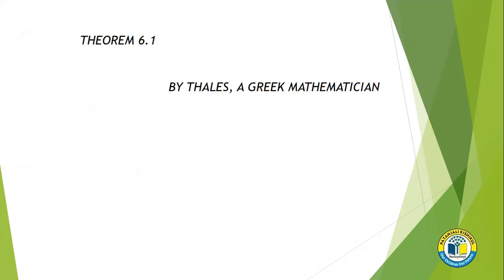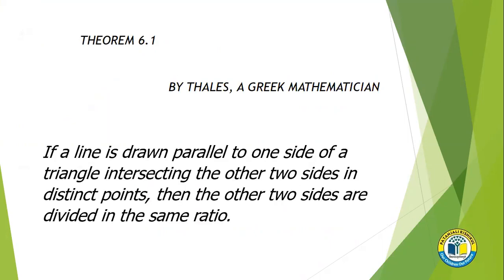According to this theorem, if a line is drawn parallel to one side of a triangle intersecting the other two sides in distinct points, then the other two sides are divided in the same ratio.